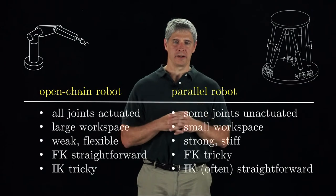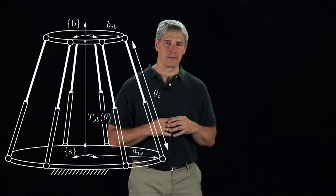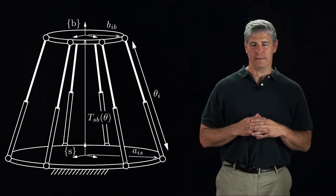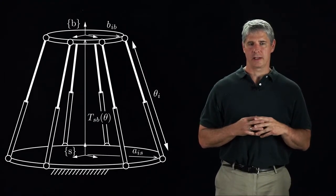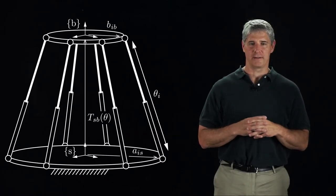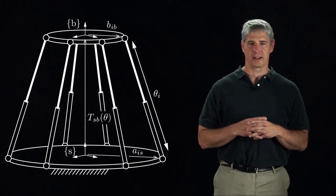To solidify our understanding of these characteristics, let's use the Stewart platform as an example. The fixed frame is S, and the end effector frame is B. The configuration of the B frame relative to the S frame is TSB of theta, where theta is the vector of joint variables representing the leg lengths.